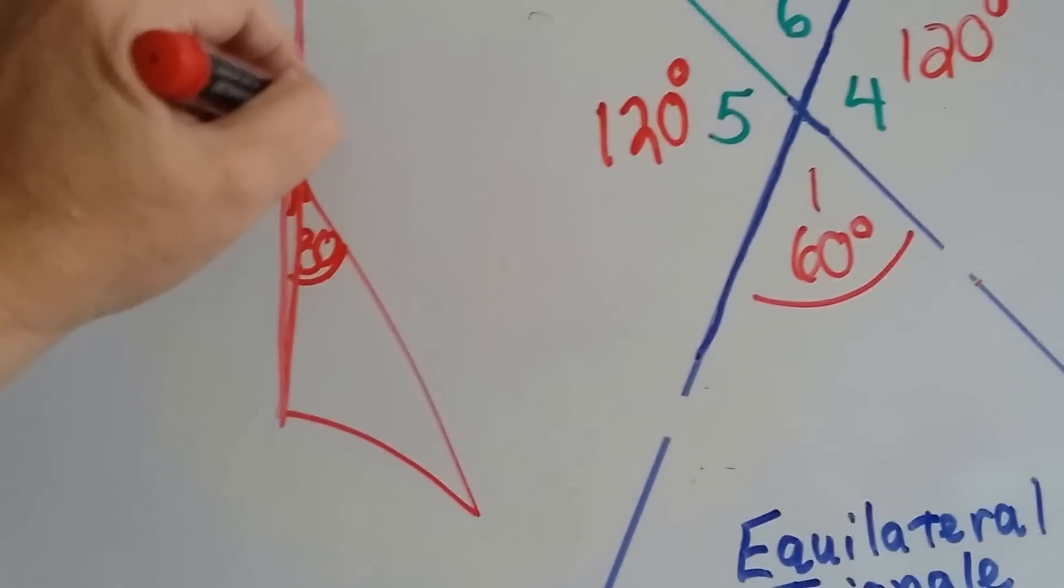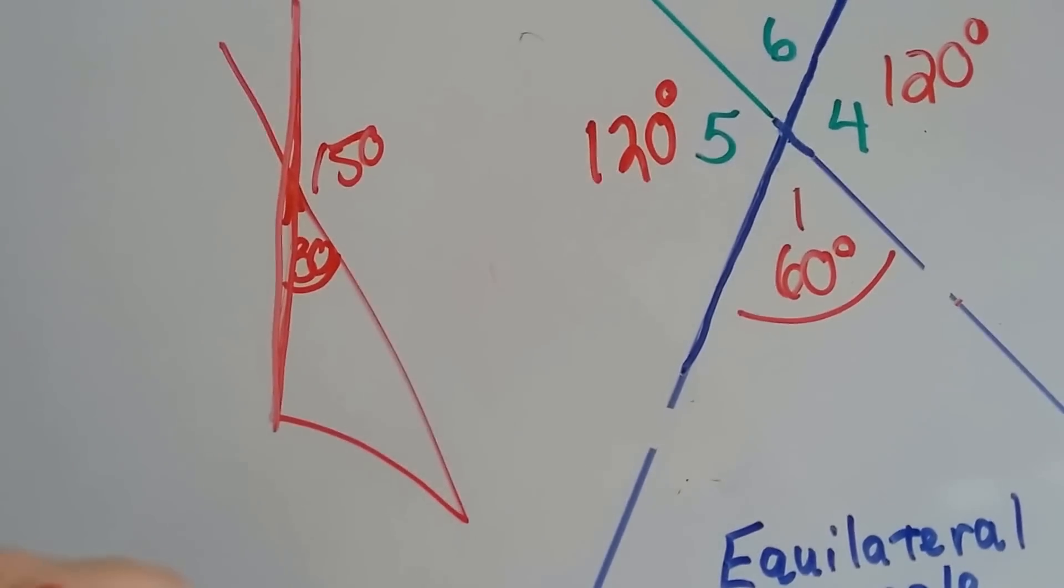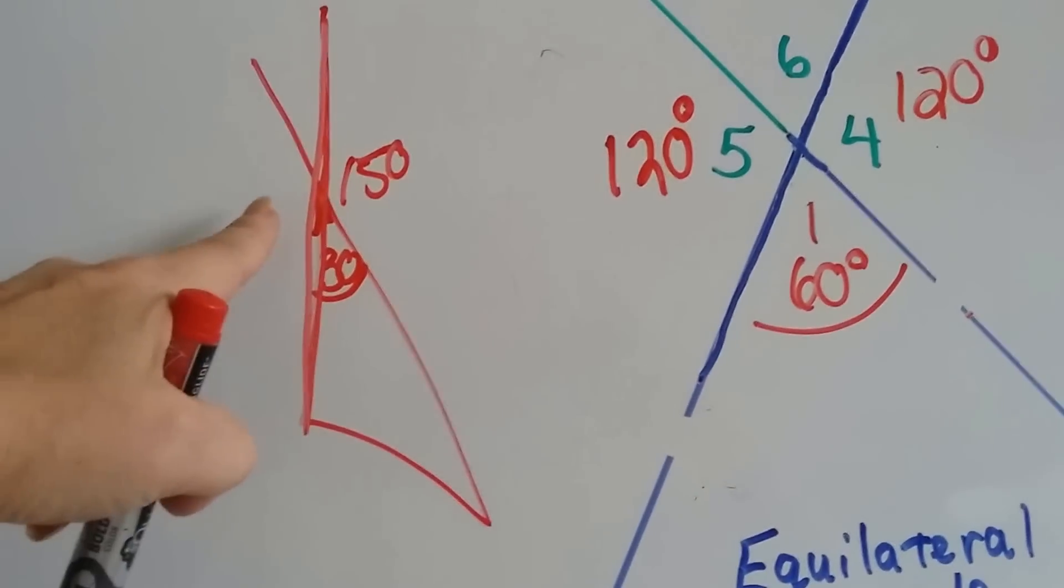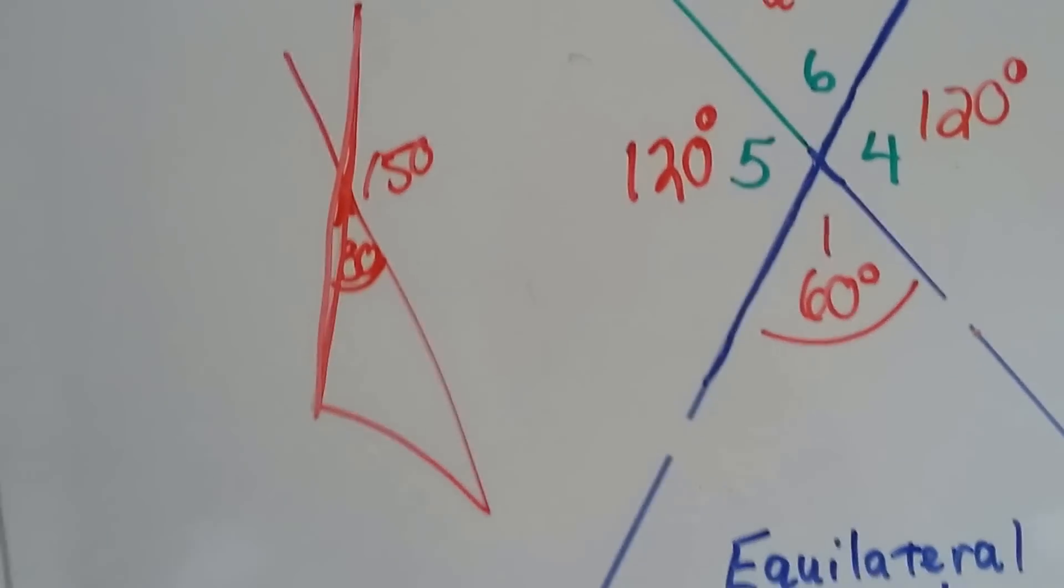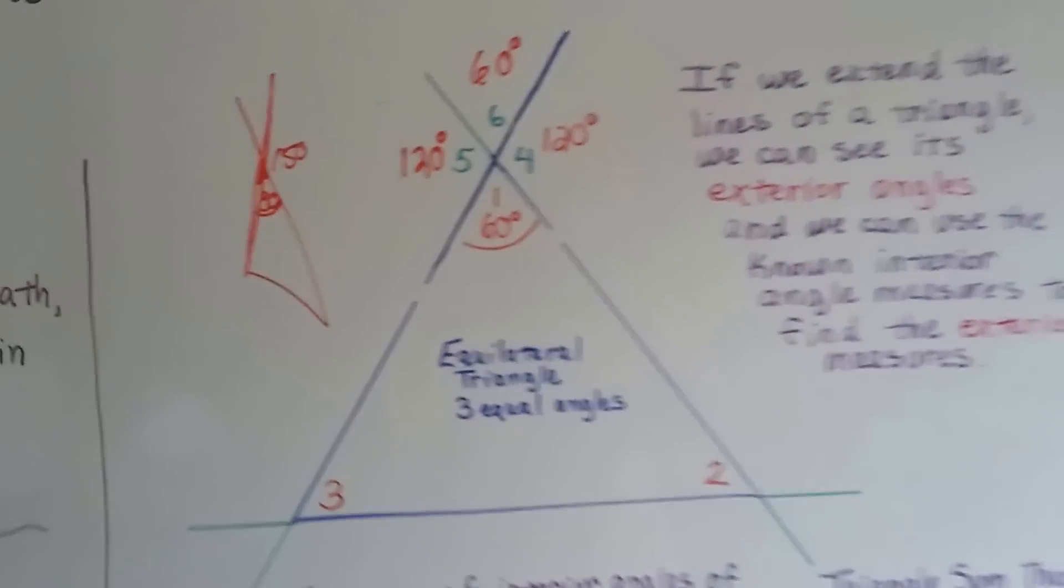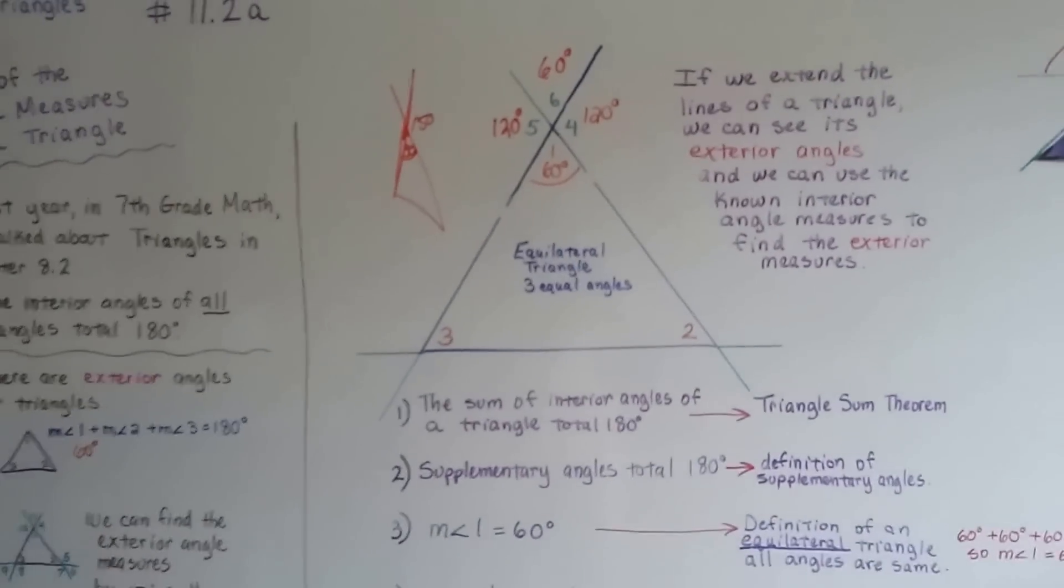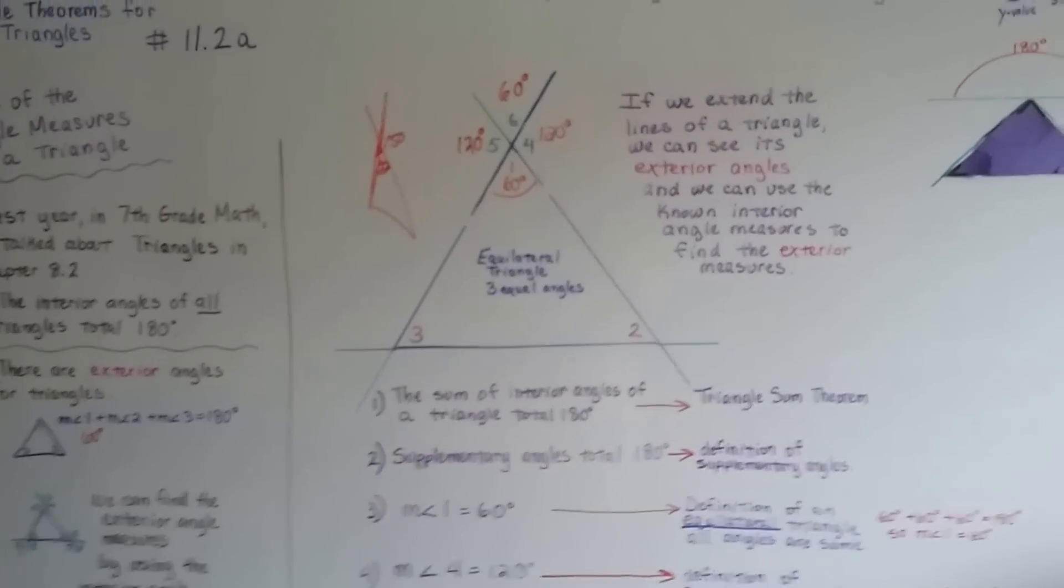So if this is 30, that would have to be 150. See that? And if this is 150, that's 150. And if that's 30, that's 30. So even in an odd-shaped triangle, we'd be able to use that. See that? I just used an equilateral one to make it easy on you.